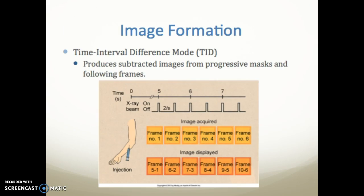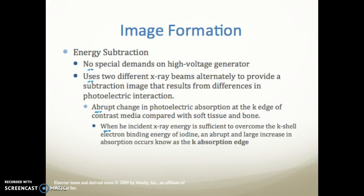Time interval difference mode produces a subtracted image from progressive mask and following frames, processing each one at a time. Energy subtraction uses two different x-ray beams alternately to produce a subtracted image resulting from differences in photoelectric absorption. It uses differences in energy to detect K-edge absorption — abrupt changes in photoelectric absorption at the K edge of contrast media compared to soft tissue and bone. When incident x-ray energy is sufficient to overcome the K-shell electron binding energy of iodine, an abrupt and large increase in absorption occurs, known as the K absorption edge.